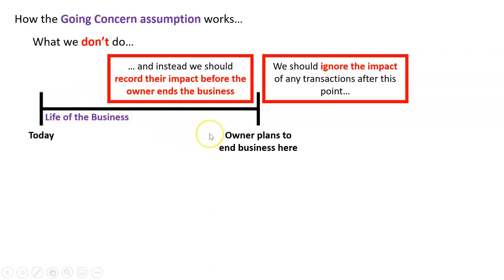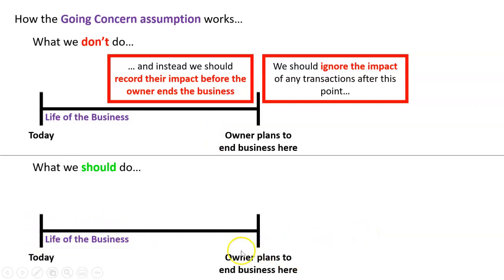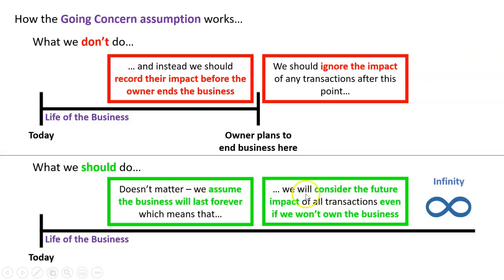But instead of ignoring future transactions, we're going to put them all here and figure out how every single transaction impacts the business before the owner ends it. And that's not really appropriate. What we should do is this: even if the owner does intend to end the business, we should assume that the business will last forever. We consider the future impact of these transactions even if we won't own the business — all the way into the future, which we call infinity.